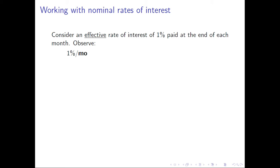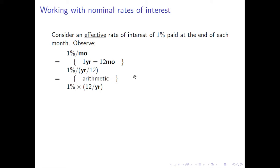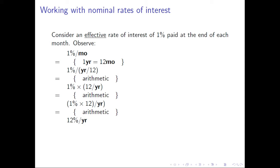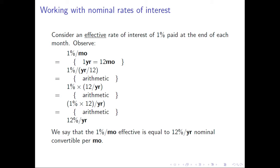Consider an effective rate of interest of 1% per month. So every month, 1% is paid to us in interest. Observe: 1% per month, since one year equals 12 months, is the same as 1% per (1/12) year. Using arithmetic, that's the same as 1%×12 per year, which is 12% per year. So we say that 1% per month effective is equal to 12% per year nominal.